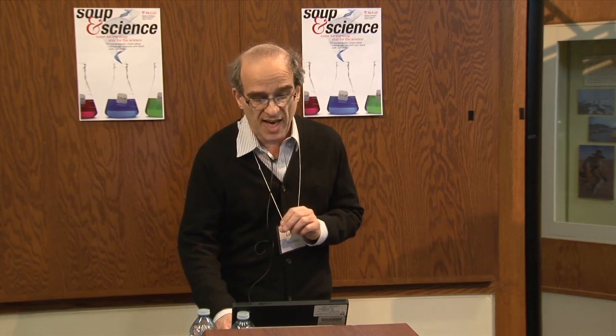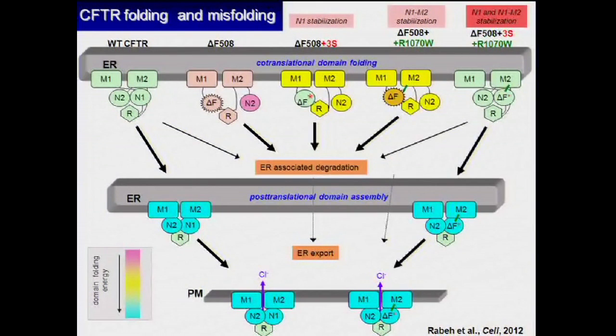How does delta-F508 impair the folding of CFTR? That's the million-dollar question. To answer that, we decided to better understand the folding of the molecule in vivo. After many years of work, we recently proposed a model which entails two structural defects: namely the NBD1 domain where the mutation is located, and secondly the interaction between domains. Both of these need to be repaired to achieve a robust rescue of delta-F508 for drug discovery purposes.